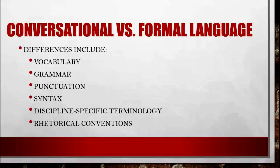There are lots of differences between conversational and formal language, including grammar, vocabulary, punctuation, and syntax — meaning how words and sentences are structured, whether complex or simple. There is also discipline-specific terminology, like axioms or alliteration in English, and rhetorical conventions — including logos, ethos, and pathos — for how language is used to convince people or portray emotions.